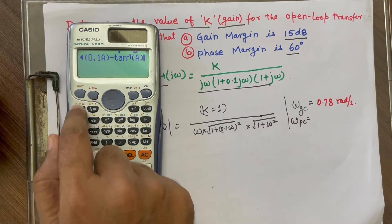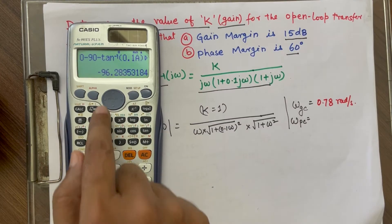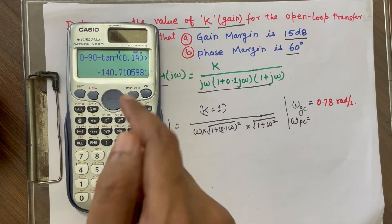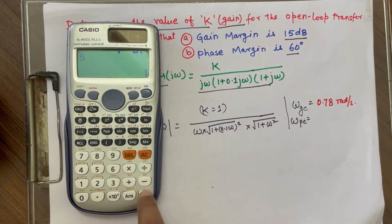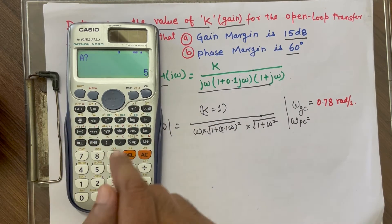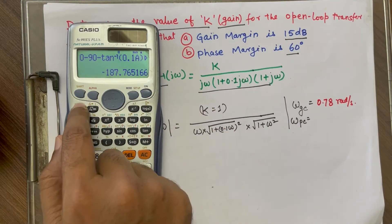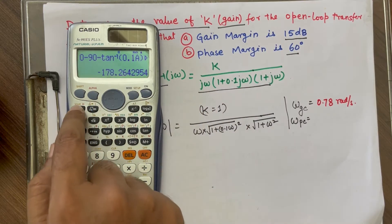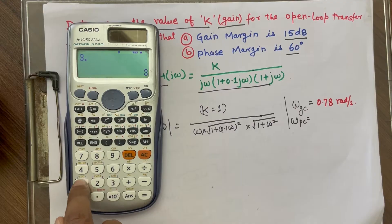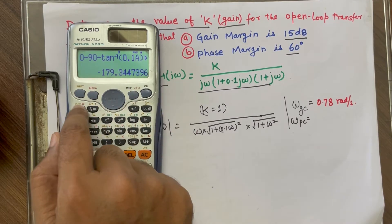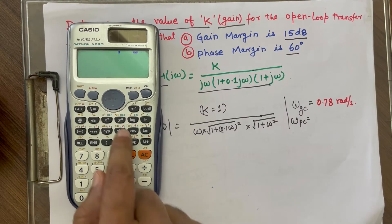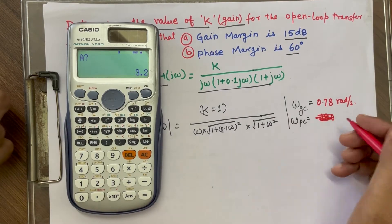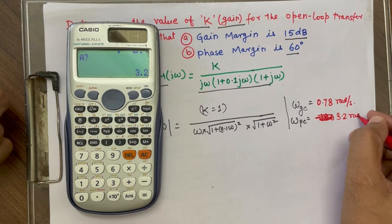Starting at ω = 0.1, the phase is −96°. Going higher: at some value it is −140°, then at ω = 5 it goes beyond −180°. At ω = 4, phase is −187°; at ω = 3, it is −178°, so it is a little more than 3. At ω = 3.1 it is −179°, and at ω = 3.2 it is roughly −180°. So the phase crossover frequency is locked at 3.2 rad/s.